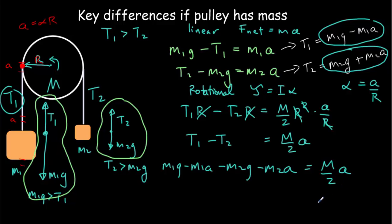Let's put all the terms with an A in them on the right-hand side of the equation. So we'll have M over 2 times A plus M1A plus M2A.